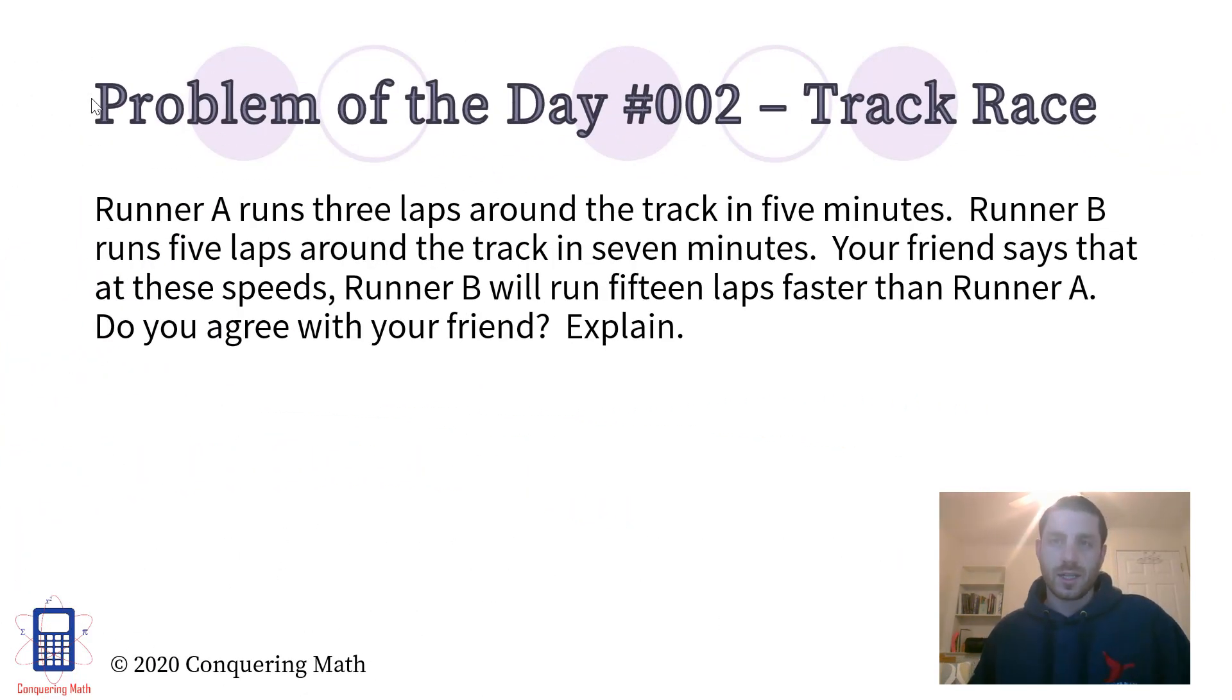So problem of the day number two is a track race. Runner A runs three laps around the track in five minutes. Runner B runs five laps around the track in seven minutes. Your friend says that at these speeds, runner B will run 15 laps faster than runner A. Do you agree with your friend? Explain.